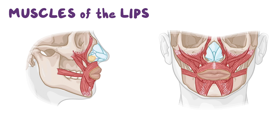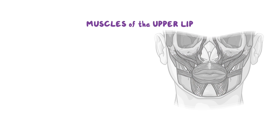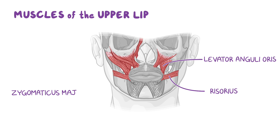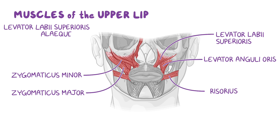As for the muscles of the lips, we'll divide them into the muscles of the upper lip and the muscles of the lower lip. The muscles of the upper lip are the risorius, the levator anguli oris, the zygomaticus major, the zygomaticus minor, the levator labii superioris, and the levator labii superioris alaeque nasae, which we mentioned earlier.